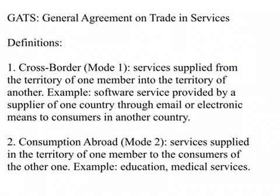The second mode is called consumption abroad. This refers to services supplied in the territory of one member to the consumers of another. For example, medical tourism — where people from the US and Europe go for medical treatment to other countries — must be considered trade in services with clearly defined rules. The same applies to education, where people from around the world come to the US or Europe to study. This is the consumption abroad mode.